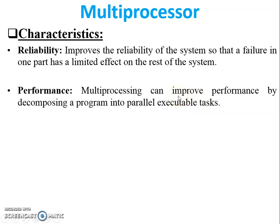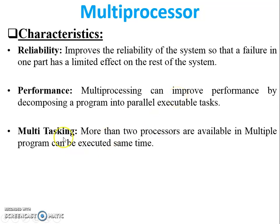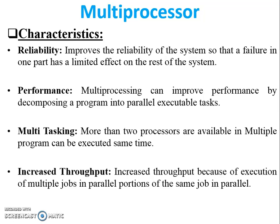One large program is divided into sub-programs or sub-tasks, and all sub-tasks are executed in parallel, which means performance will be high. Multitasking: more than two processors are available so multiple programs can be executed at the same time. Five programs can execute simultaneously — this is multitasking. This also increases throughput due to execution of multiple jobs in parallel.